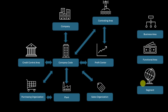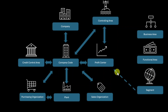Last but not least, we have the so-called segment. The segment is mandatory for certain accounting standards such as IFRS. For instance, if we have a multinational company in the automotive industry, one segment could be the automotive division of North America, another the automotive division of South America, and so on. The segment is normally derived from the profit center — this is also best practice — however, it would also be possible to directly insert the segment during financial postings.